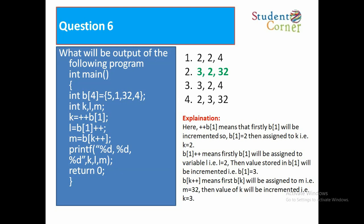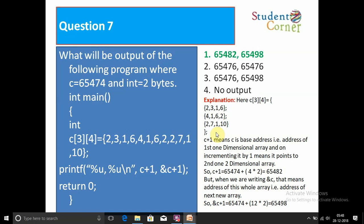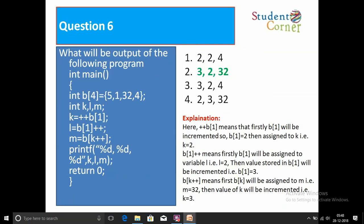Explanation: ++b[1] means b[1] is first incremented from 1 to 2, then assigned to k, so k = 2. Then b[1]++ means b[1] (which is 2) is first assigned to l, so l = 2, then b[1] is incremented to 3. Then b[k]++ means b[2] = 32 is first assigned to m, so m = 32, then b[2] is incremented. So k, l, m values printed are 3, 2, 32.